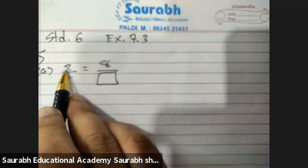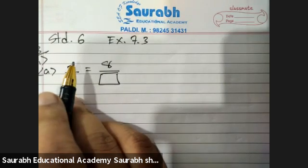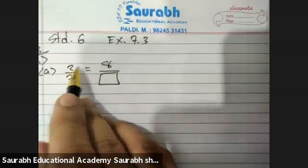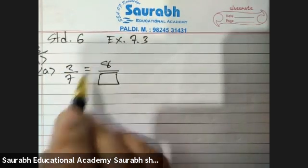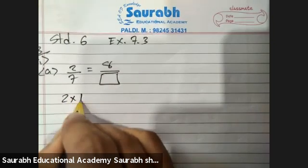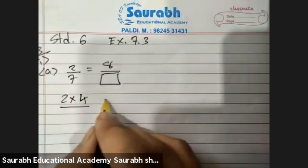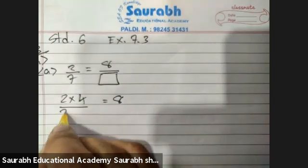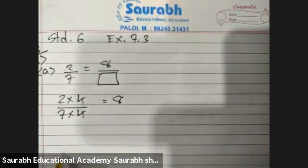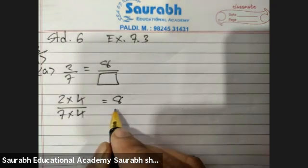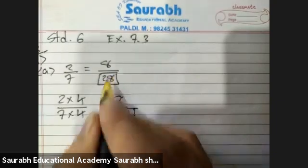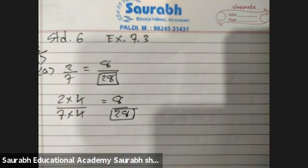Two-sevenths equals eight upon blank. For getting 8, you should tell me the table of 2. Two fours are 8, right? So 2 into 4 is 8. When you multiply the number with the numerator, the same number is to be multiplied with the denominator. Seven fours are 28. So your answer here is 8 upon 28.